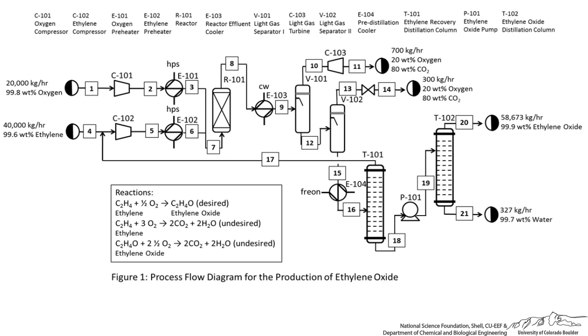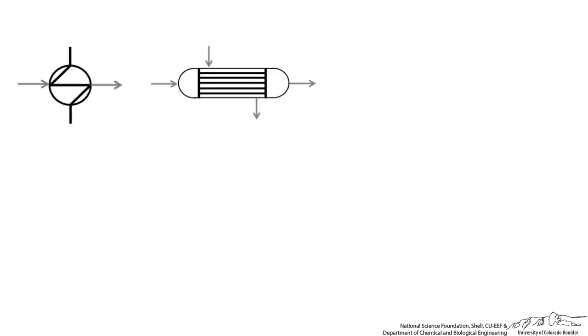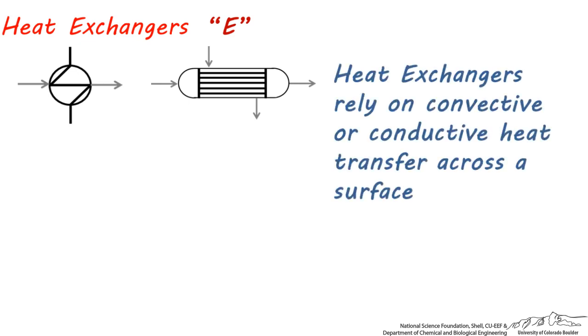You may have seen these symbols before. These are heat exchangers, sometimes also called exchangers. If they're used to cool down a process stream, you'll also hear people refer to them as coolers or chillers as well. Heat exchangers have the letter abbreviation E. Unlike furnaces, heat exchangers rely on convective or conductive heat transfer across the surface and not combustion of flammable gases.